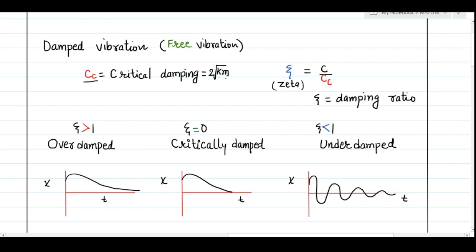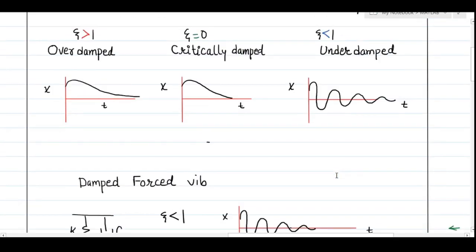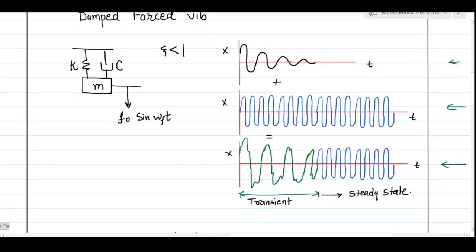The most interesting case is under-damped vibration, when the damping ratio zeta is less than 1. In this case we observe oscillations whose amplitude decays with respect to time. This decay happens because damping is an energy dissipation mechanism that converts vibration energy into heat or other forms, causing the amplitude to reduce and eventually reach zero displacement.